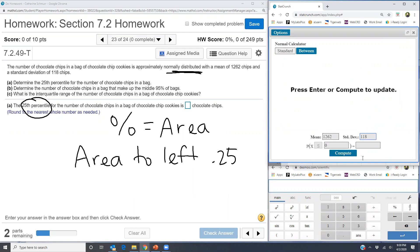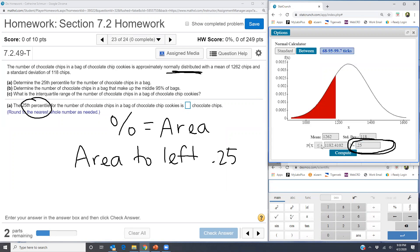And I know that when I'm doing probability problems, the area or probability always goes in this box to the right of the equal sign. And so I'm going to put in 0.25. And when I compute, the value of number of chocolate chips shows up here in this other box. So we have 1182 chocolate chips, and they say round to the nearest whole number as needed. So I'm going to enter 1182.